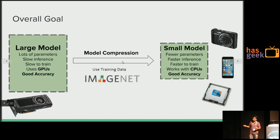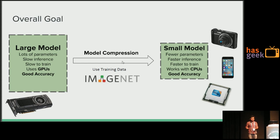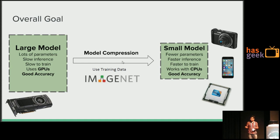This is what we call the problem of model compression. You have a large model which takes lots of parameters, it's very slow, and uses GPUs — but it has good accuracy, which is what we like about deep neural networks. What we want to do with model compression is to turn it into a smaller model such that you can use CPUs now, without needing GPUs to do inference, possibly also training. But even this small model should get good accuracy, comparable to the large model.